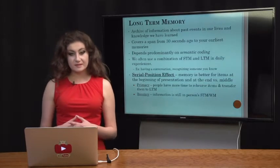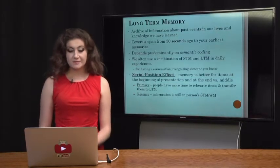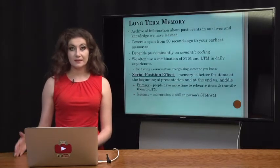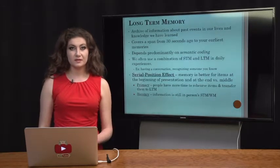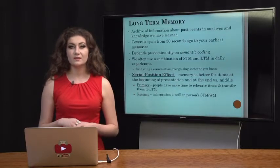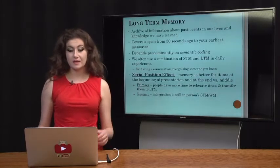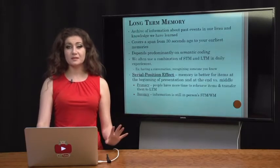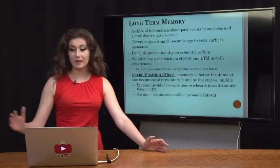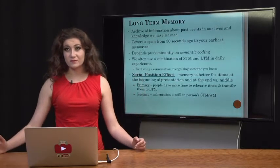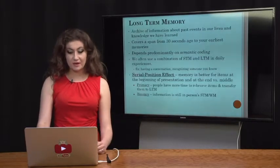Conversely, we have the concept of recency — things that appear at the end of a list are remembered better because that information is still active in a person's short-term or working memory within that 15 to 30-second period. Things in the middle tend to get lost because you haven't had as many times to repeat them, and they've also gotten occluded by interference from information that came after. That's why primacy and recency drive the serial position effect.